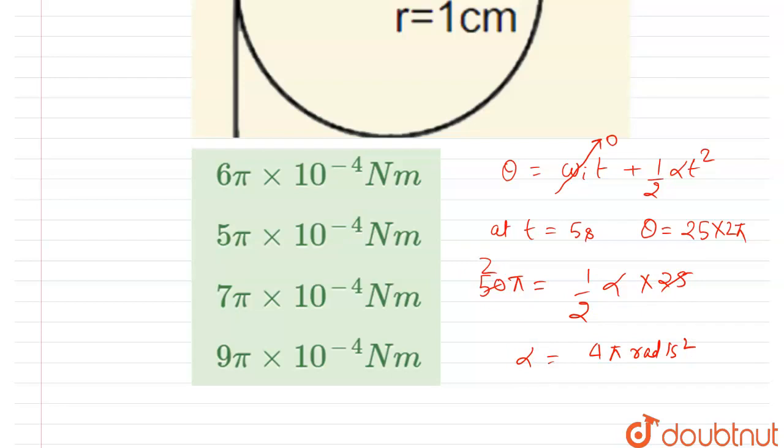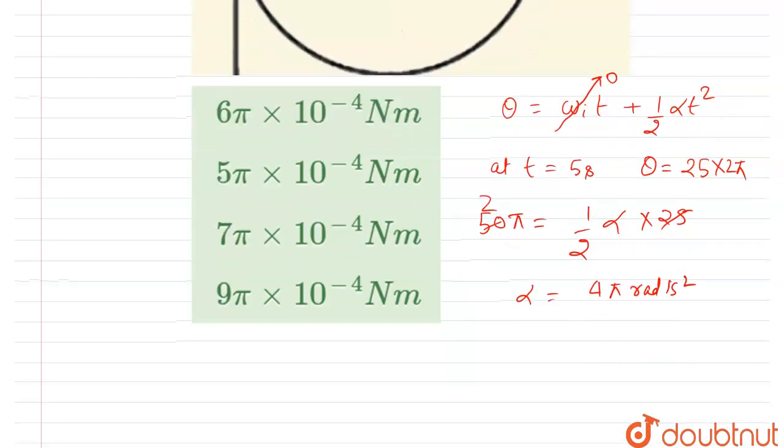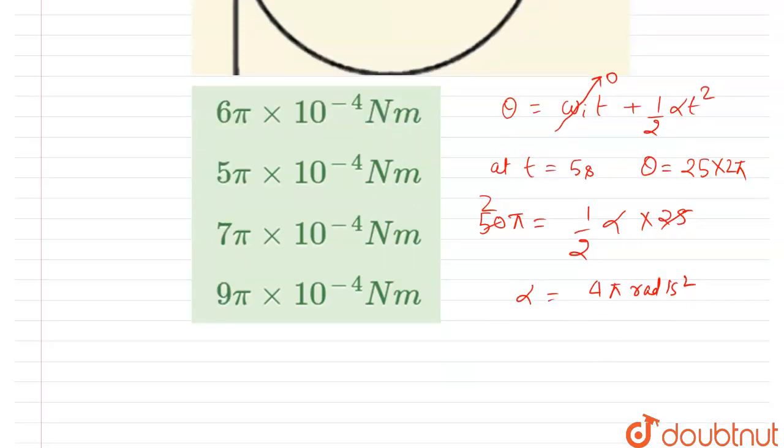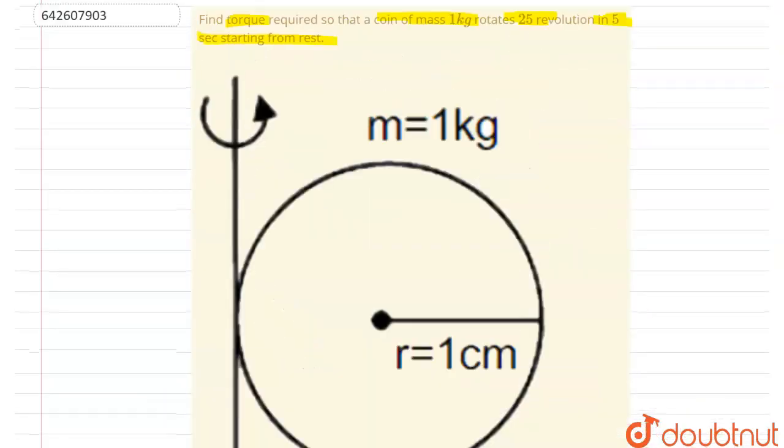is I times alpha, and we know the alpha here. Now if you see in the diagram, we can calculate the I also. So, I about an axis in the plane of this coin and passing through the center axis, like